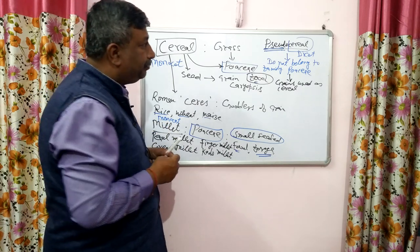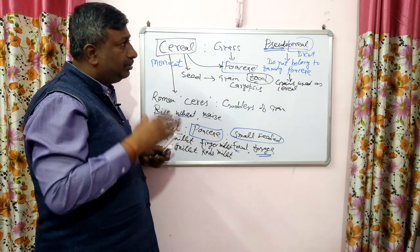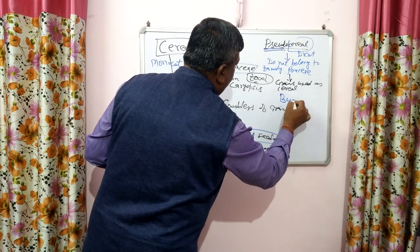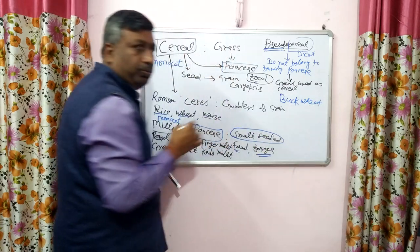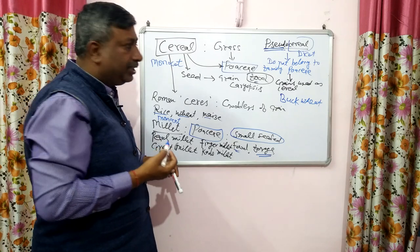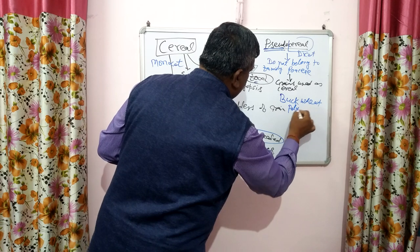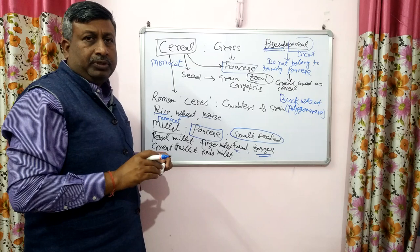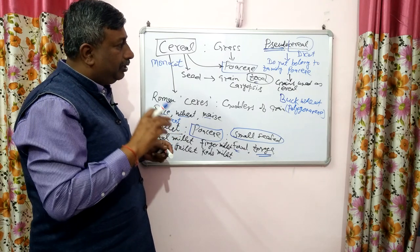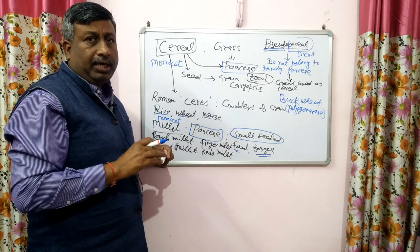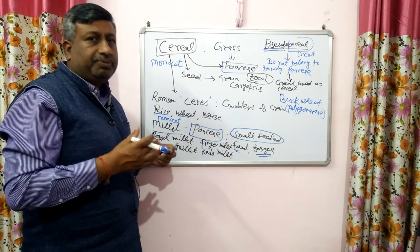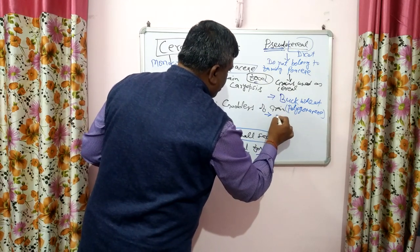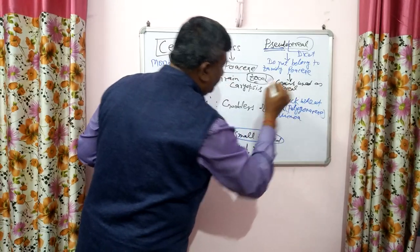That is why these are called pseudo cereals. A very common example is buckwheat — known as kuttu — Fagopyrum esculentum, which belongs to family Polygonaceae. This buckwheat is not a monocot; it is a dicot and can be used as cereal. That is why it is known as a pseudo cereal — crops that are not true cereals but are used in the same way as cereals.